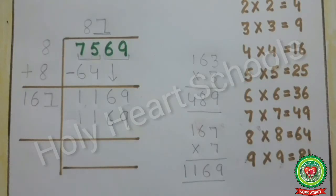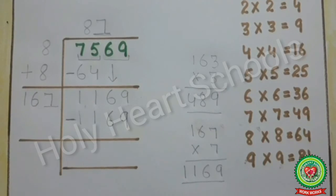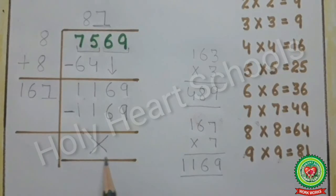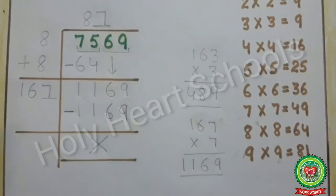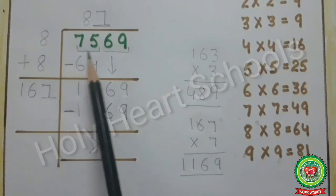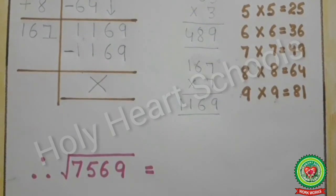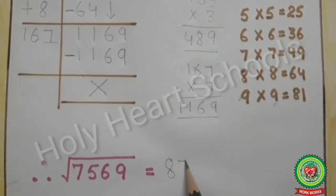The next step is to find the remainder by subtracting 1169 from 1169, giving 0. In long division, whenever we get 0, we put a cross. We are left with no pair and remainder is 0, so our quotient 87 becomes the required square root of 7569. Therefore, the square root of 7569 is equal to 87.